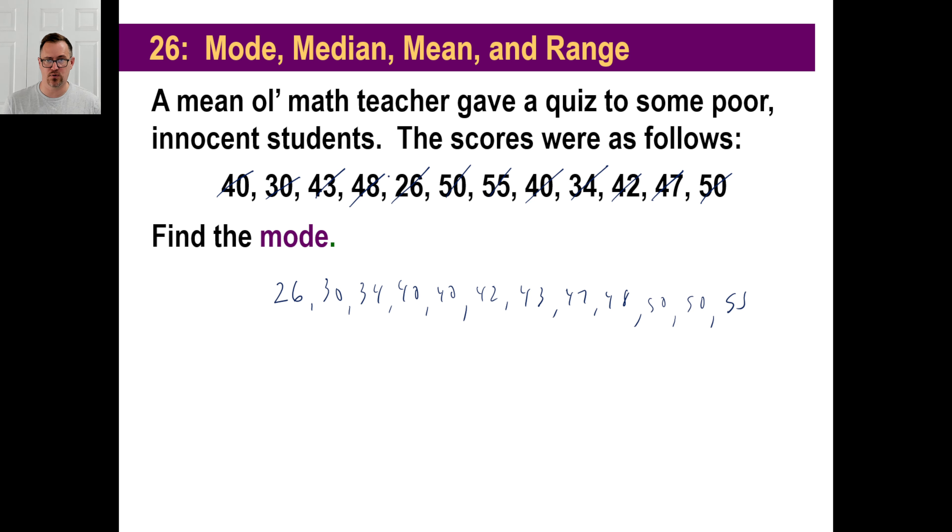43 looks next. Nope, 42. So we got 42 and then 43. And then 47, then 48. And then 50. Oh, there's another 50. And then the last one's 55, right? You might just want to count. 1, 2, 3, 4, 5, 6, 7, 8, 9, 10, 11, 12. Yeah, so we got it.